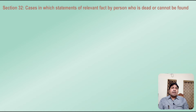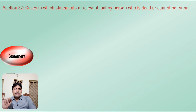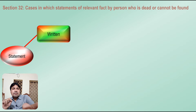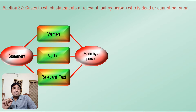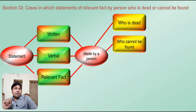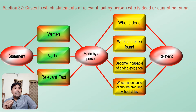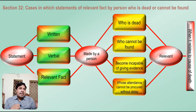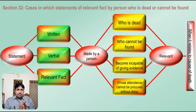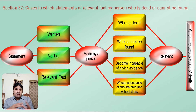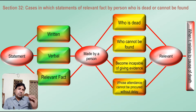Now, cases in which statement of relevant fact by a person who is dead or cannot be found. Section 32 covers these things: any statement which is written, verbal, or a relevant fact made by a person who is dead, who cannot be found, who has become incapable of giving evidence, or whose attendance cannot be procured without delay and expense — that becomes relevant when it relates to the cause of death.